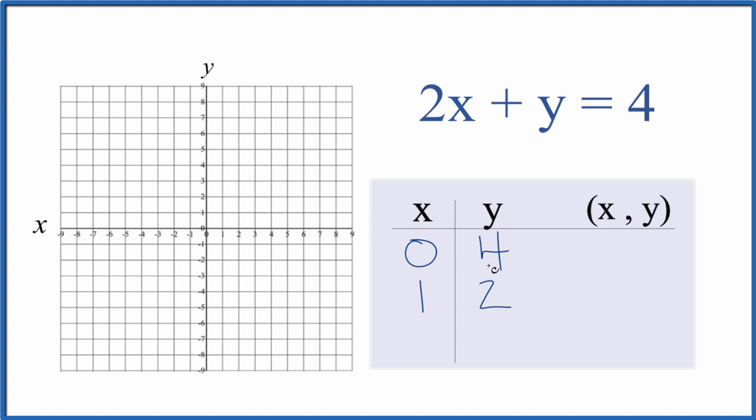And we could graph two points. That would work. But I like having three in case I've made an error up here. So let's just say x is 2. So 2 times 2, that's 4. So 4 plus y equals 4. Subtract 4 from both sides. y equals 4 minus 4. y equals 0.